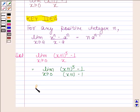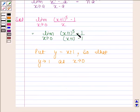Now, put y equals to x+1 so that y tends to 1 as x tends to 0. So, now this is equal to limit y tends to 1, y^5 minus 1 upon y minus 1.